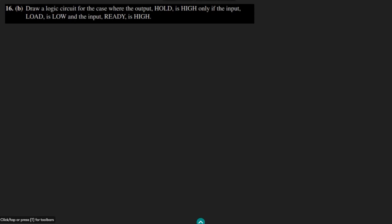This is question 16 part b. Here we are going to draw a logic circuit for the case where the output 'hold' is high only if the input 'load' is low and the input 'ready' is high. So when load is low and ready is high, the output 'hold' will be high.